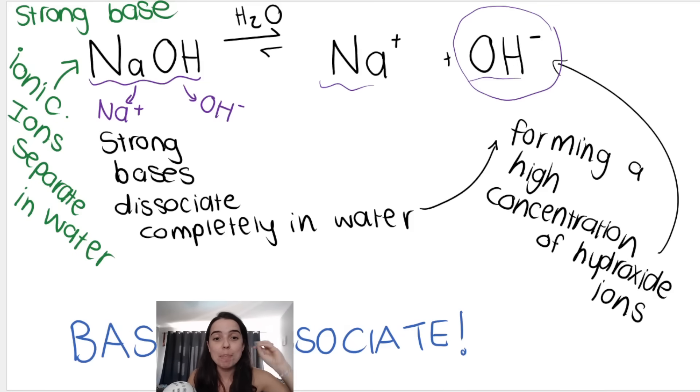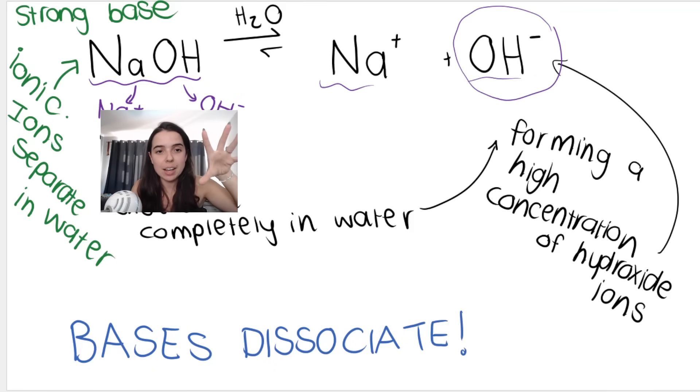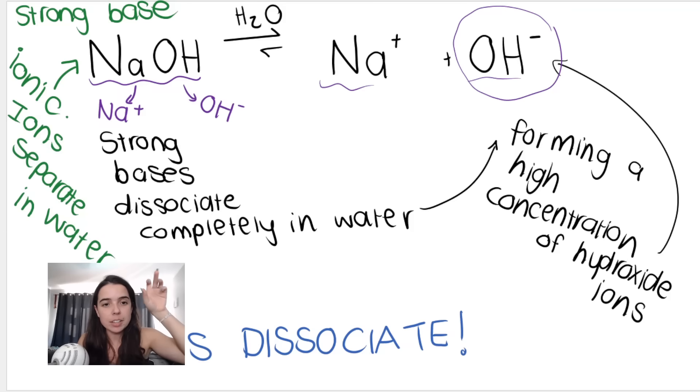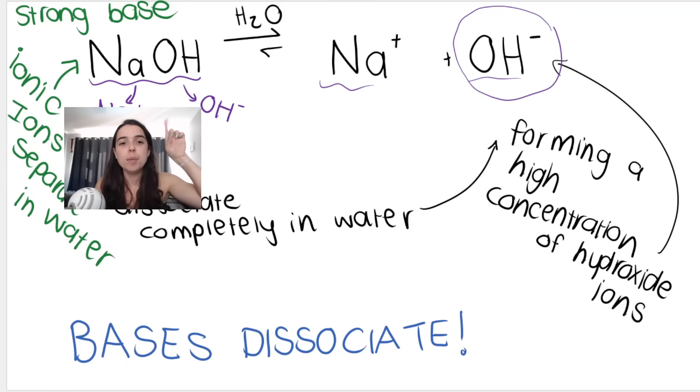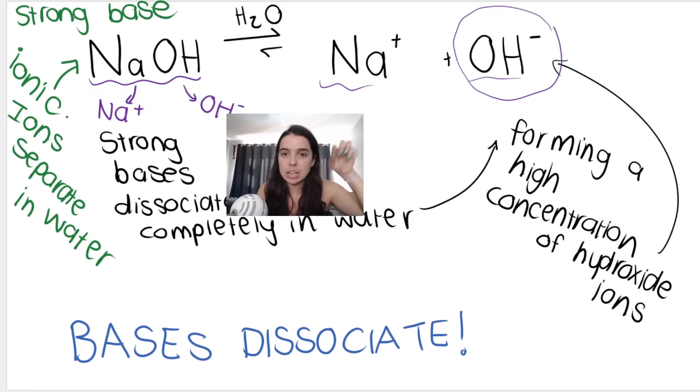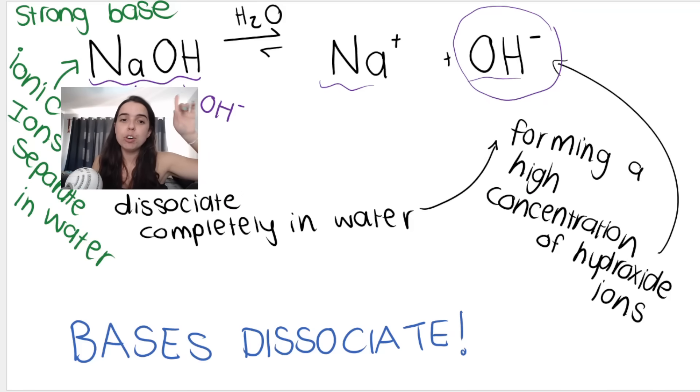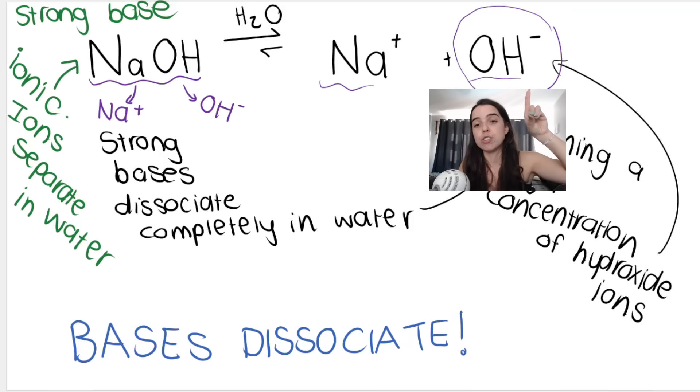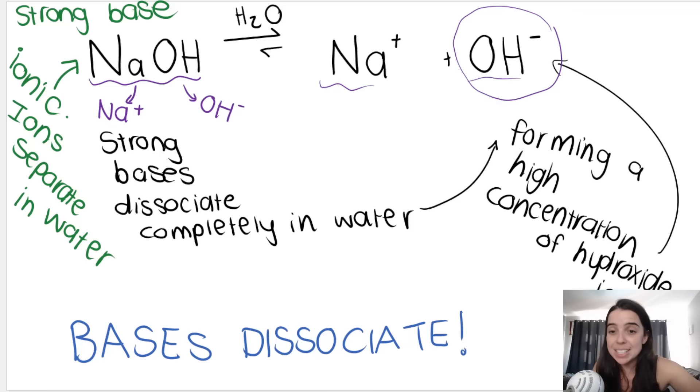Bases dissociate, meaning they break up or ionize. Ionic separates in water, becomes Na+ and OH-. Because this is a strong base, it forms a high concentration of hydroxide ions. If I know the concentration of the base, I immediately know the concentration of the hydroxide ions, which will be important when calculating pH of bases later.